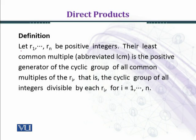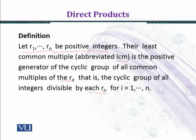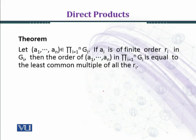Let r1, ..., rn be positive integers. Their least common multiple, abbreviated as LCM, is the positive generator of the cyclic group of all common multiples of r_i — that is, the cyclic group of all integers divisible by each r_i for i equal to 1 to n. Now we state the theorem.